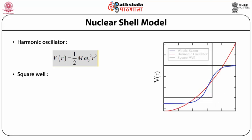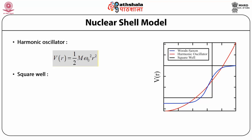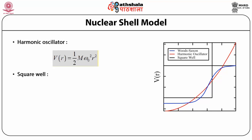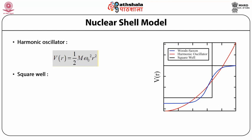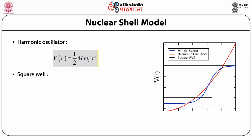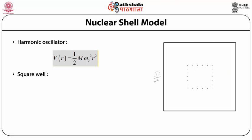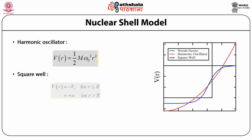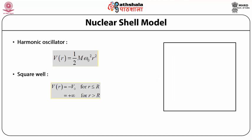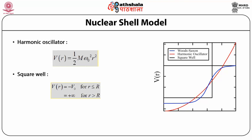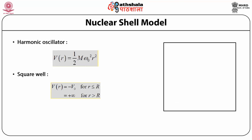First of all, people tried the square well potential. Why? Because from experimental observations — especially the evidence from the Rutherford scattering experiment — it turned out that the nucleus is spherical in nature. This means the nuclear potential is the same everywhere within the nucleus, and outside the nucleus the nuclear potential is zero. So people thought a nucleus can be well described by a square well potential, where V(R) = -V₀ for R ≤ R and V(R) = ∞ for R > R.